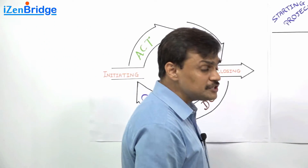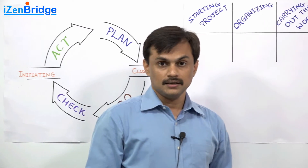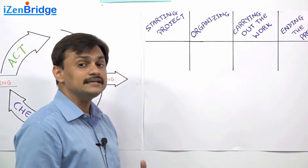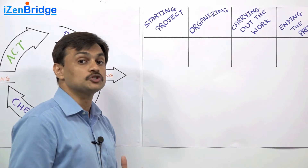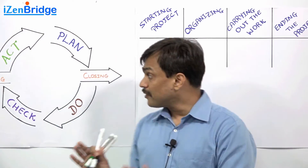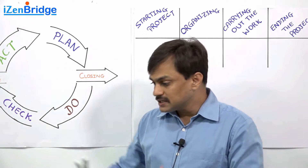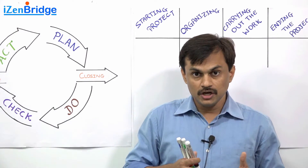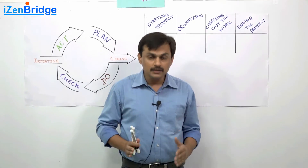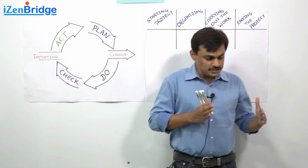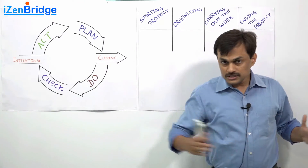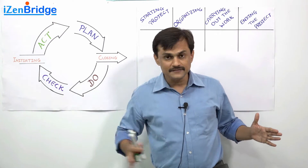The confusion which many test takers end up facing is they start relating these process groups with the project management lifecycle. These process groups are not stages in the project. It's not like you are doing Initiating, then Planning, then Executing, then checking and acting, and then Closing. It's not a sequence — it's not a project lifecycle.